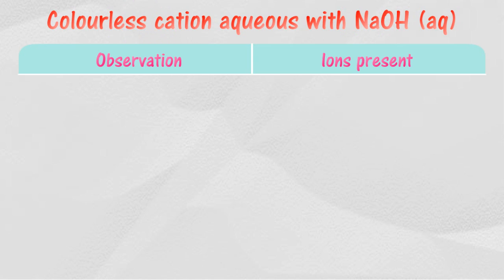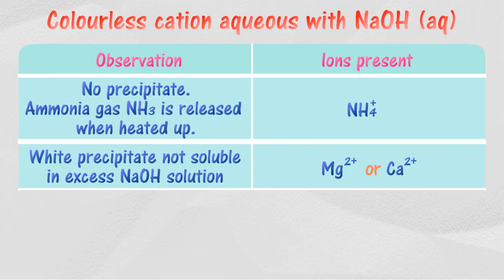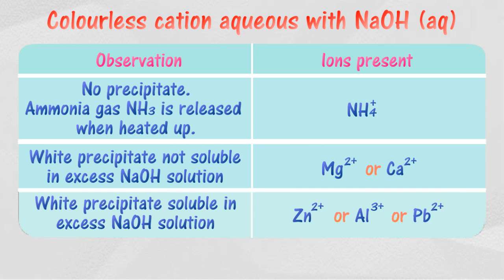For colorless cation aqueous solution with sodium hydroxide: if no precipitate is formed but ammonia gas is released, ammonium ions may be present. If a white precipitate is formed that is not soluble in excess sodium hydroxide solution, magnesium or calcium ions may be present. If the white precipitate is soluble in excess sodium hydroxide solution, zinc, aluminum, or lead ions may be present.